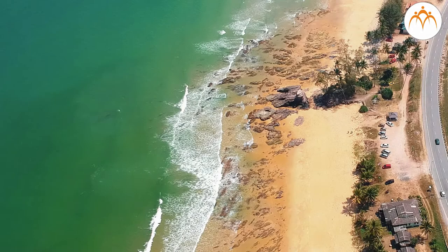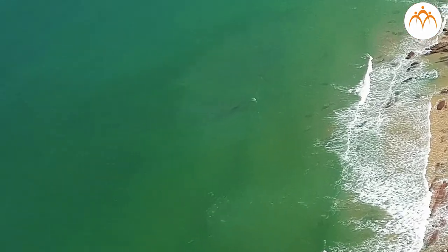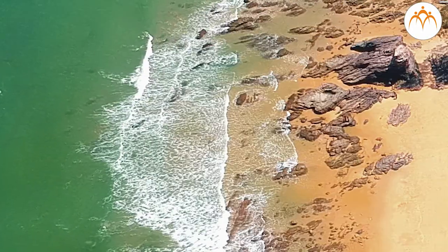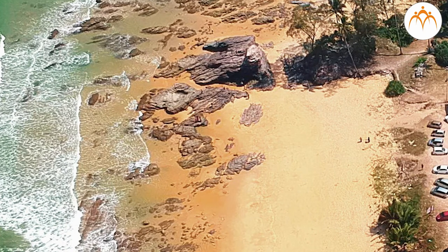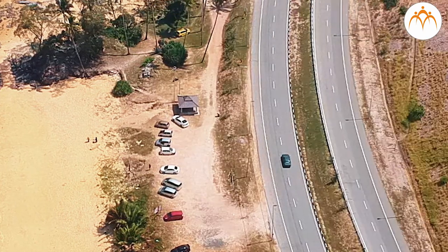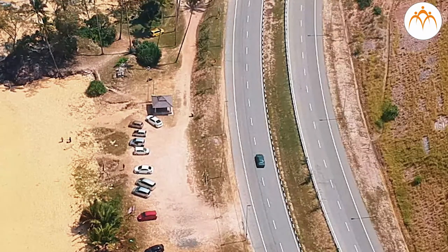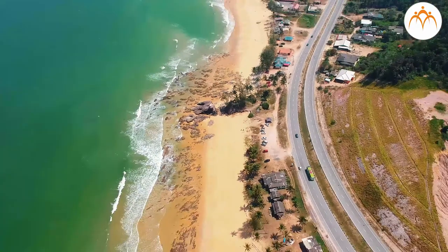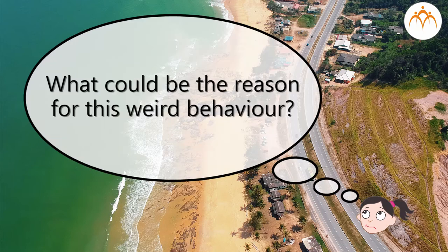If you happen to visit a beach in summertime, you must have noticed that water is cooler than the sand which is next to it. The tar road next to the sand is much hotter than the sand. All are equally heated by the sun rays. What could be the reason for this weird behaviour?